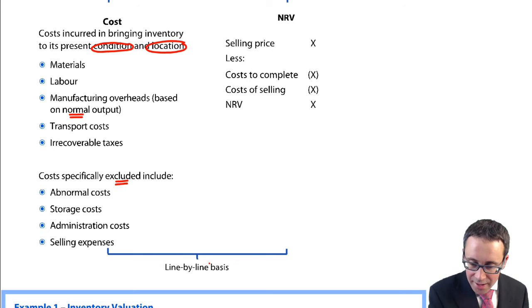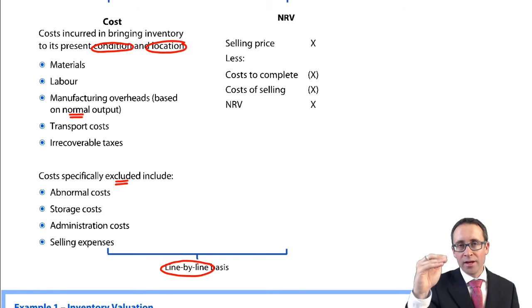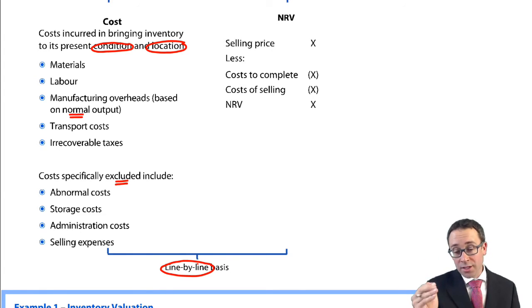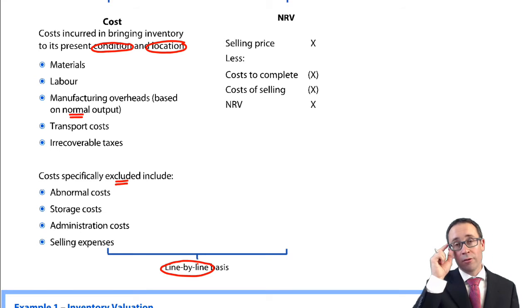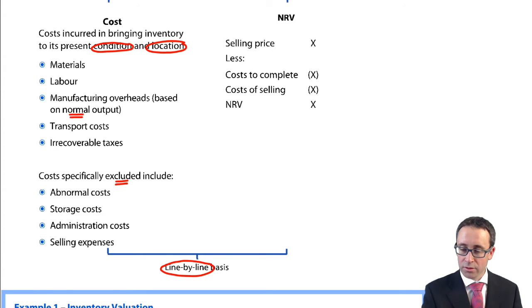A key point is that when you value inventory, you do it on a line-by-line basis: Product A at lower of cost and NRV, Product B at lower of cost and NRV, Product C at lower of cost and NRV — then total it up to get the year-end inventory, whereby you debit inventory on the statement of financial position and credit closing inventory through profit or loss.